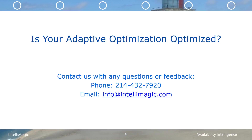In this case study, IntelliMagic Vision was used to identify unexpected imbalances on the back-end drives of an HP 3PAR system. IntelliMagic Vision uses expert knowledge about systems, configuration, and workload to proactively identify potential risks in the environment. The user interface integrates the logical and physical components to allow for easy drill-downs and identification of root cause. If you would like to find out more about IntelliMagic Vision for your environment, please email us at info@intellimagic.com.